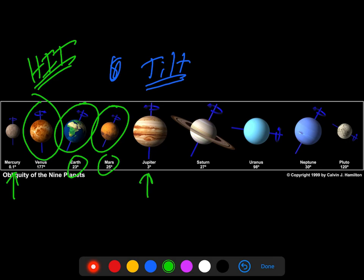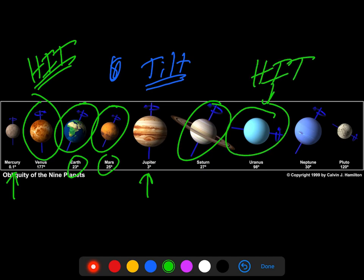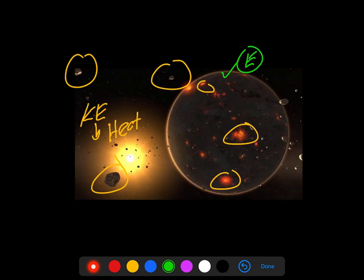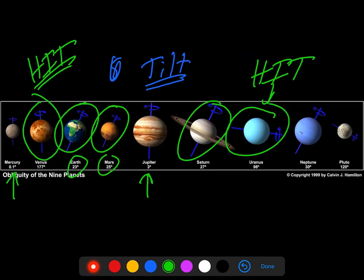Jupiter same way, but obviously Saturn got hit. Uranus must have got hit very hard—a big hit there because it's over on its side. Pluto is almost upside down as well. Neptune's at a pretty good angle like that.